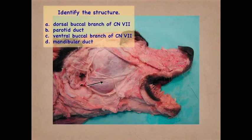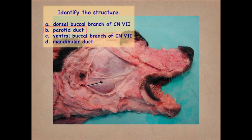This is a canine specimen — identify the structure at the arrow. This is the parotid duct. Remember, in large animals the parotid duct does not cross the masseter muscle as it does in the dog.